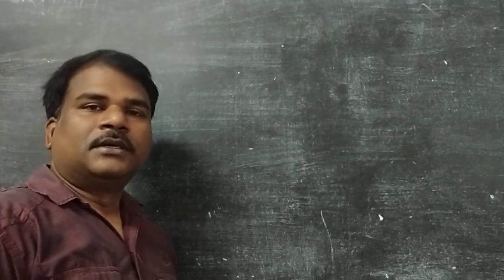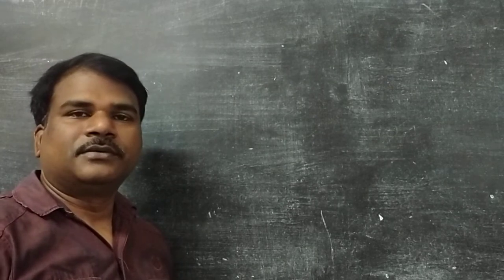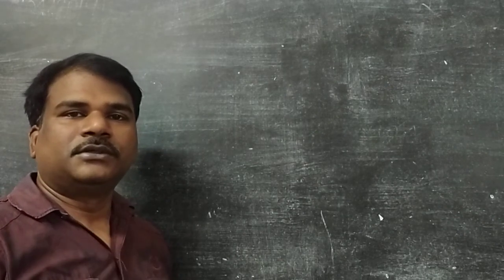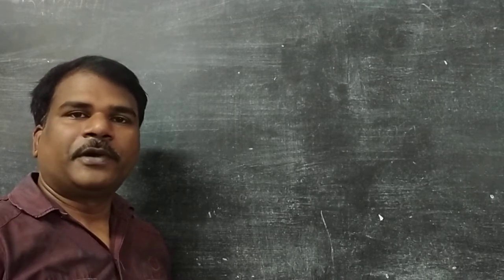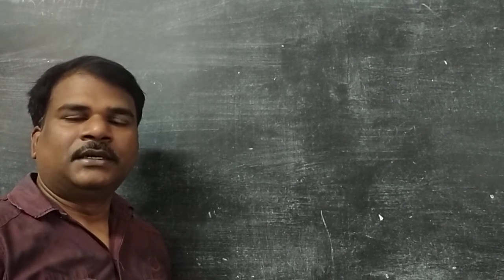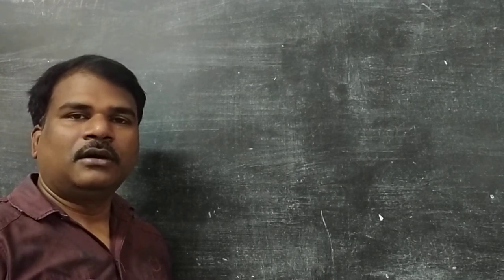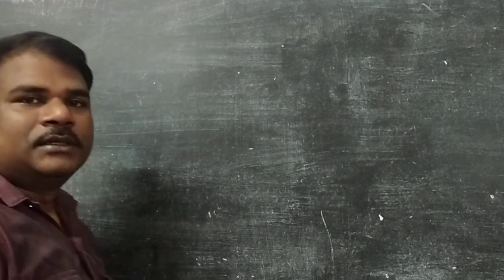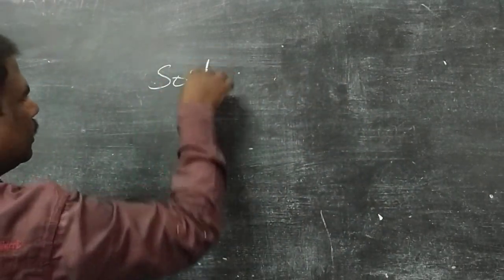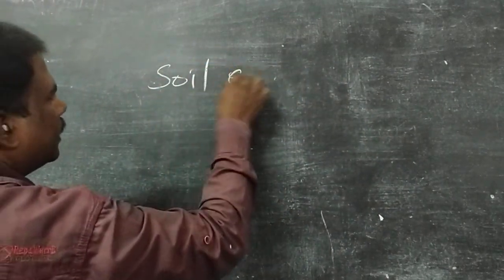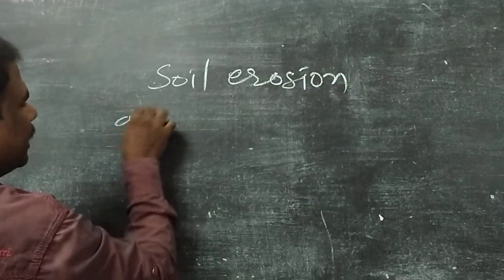Hello students. We see around us smaller stones and small particles of rocks. The small particles of rocks, silt and some pebbles and stones are called soil. Today we are going to learn about soil erosion and conservation.